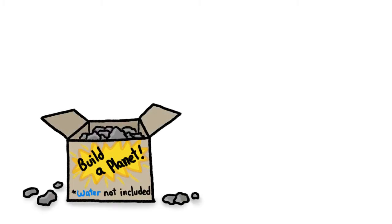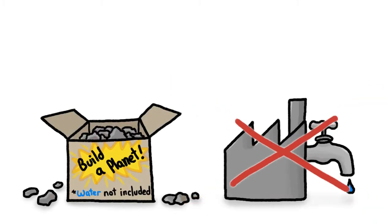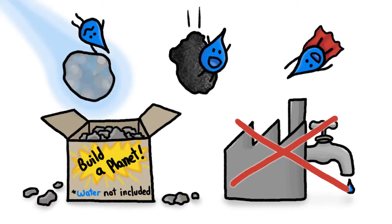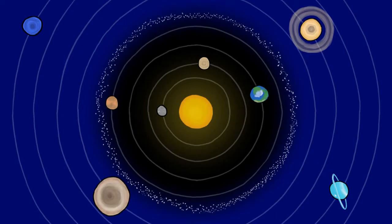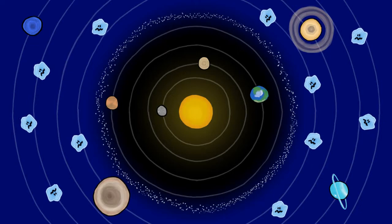Since Earth's water was neither part of the original package nor manufactured here, it must have flown in from far away, on meteoroids or comets or other bodies originating in the outer solar system, where they were far enough from the sun for frozen water to survive.